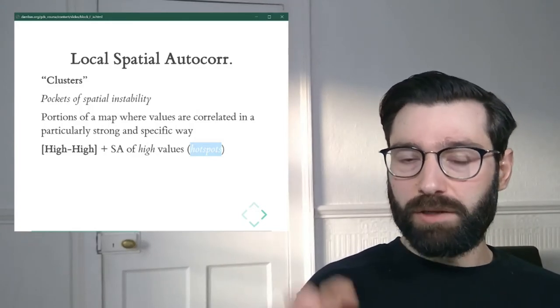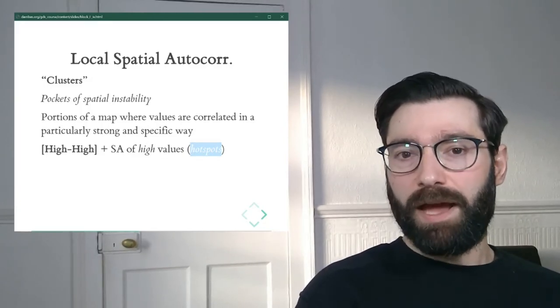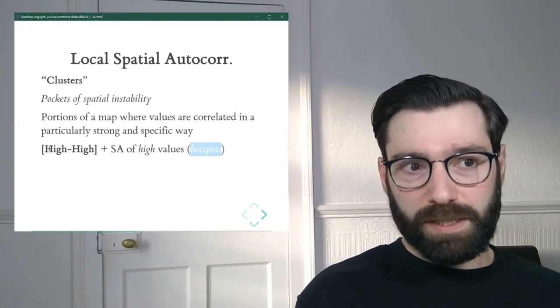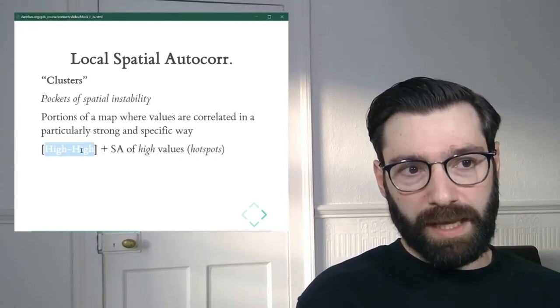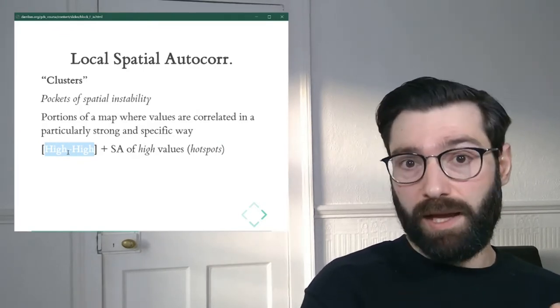And this is a case of positive local spatial autocorrelation. It's local because we're looking at a part, at a section of the map, not at the entire map. And it's positive, not because it has high values, but because it has the same type of values being located in the same way. In this case, high.